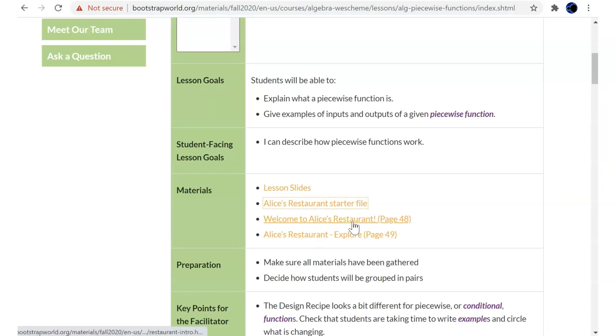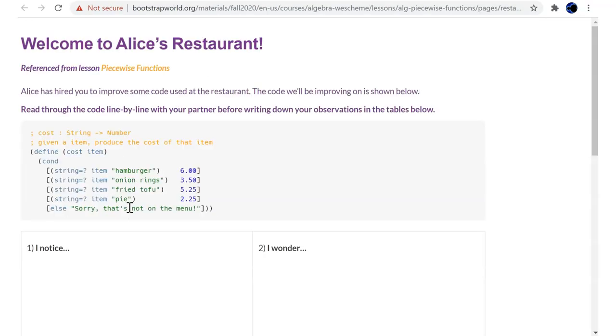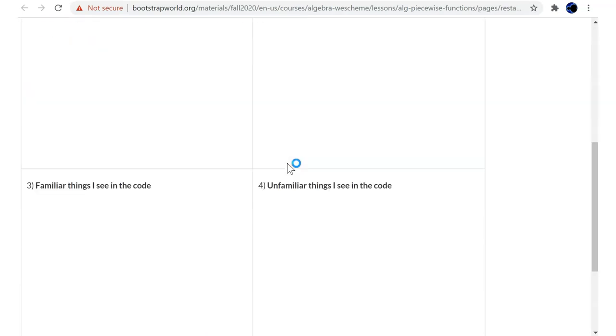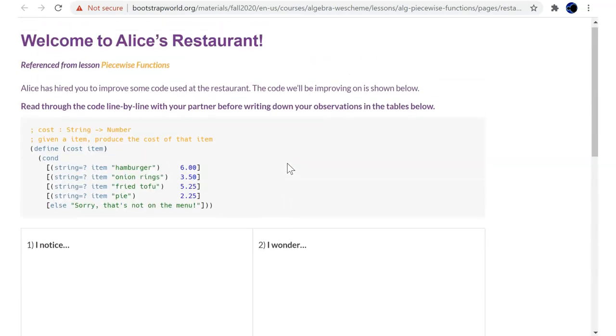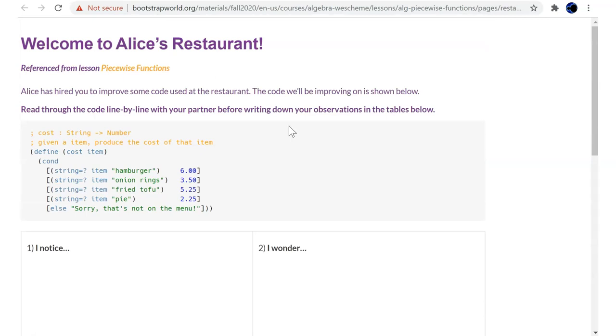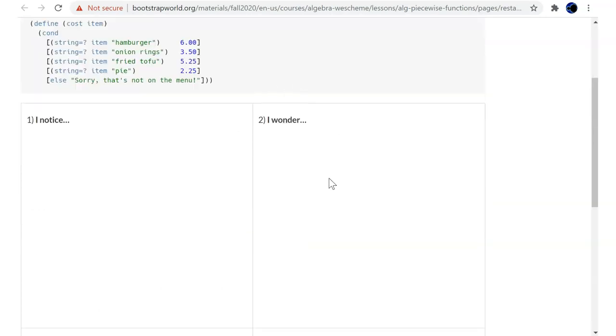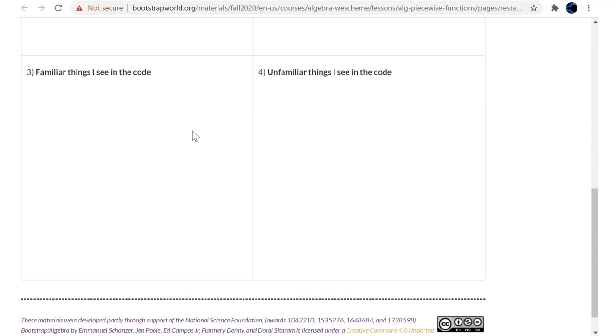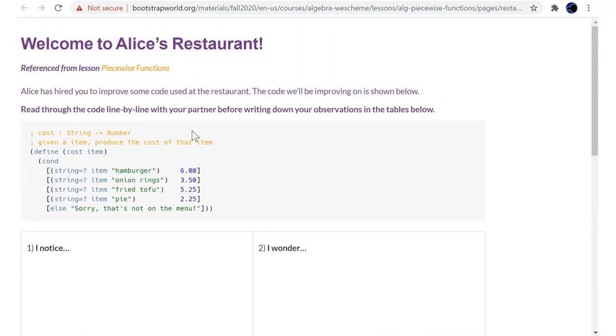And then also open the link, Welcome to Alice's Restaurant. This is just a notice and wonder exercise. So go ahead and print out this or use a document and answer these four sections. What do you notice about this code? What do you wonder about this code? What are some familiar things you see? And what are some unfamiliar things you see? So go ahead and pause right now and look at this code here and fill in the sections on this exercise.